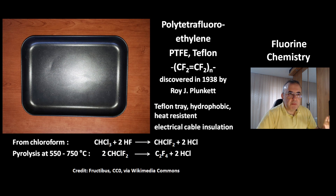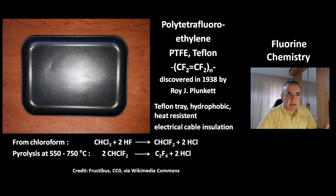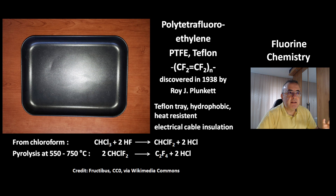This is the formula of polytetrafluoroethylene, also called Teflon. Teflon was discovered in 1938 by Roy J. Plunkett. It is hydrophobic and heat resistant, which is why it can be used for trays — Teflon trays. Teflon is also used for electrical cable insulation. The synthesis starts from chloroform by adding hydrogen fluoride, giving chlorodifluoromethane. Pyrolysis at 550 to 750 degrees Celsius gives tetrafluoroethylene, which can be polymerized to Teflon.